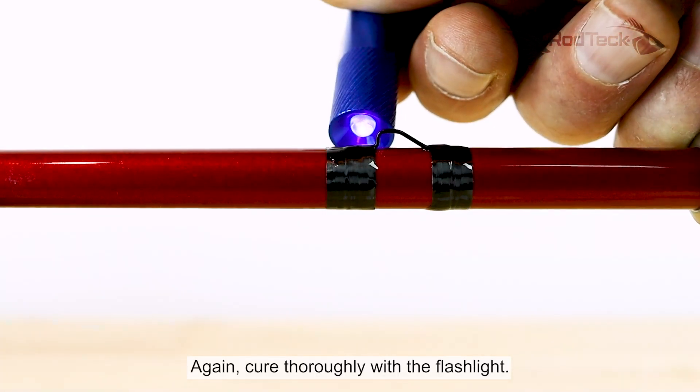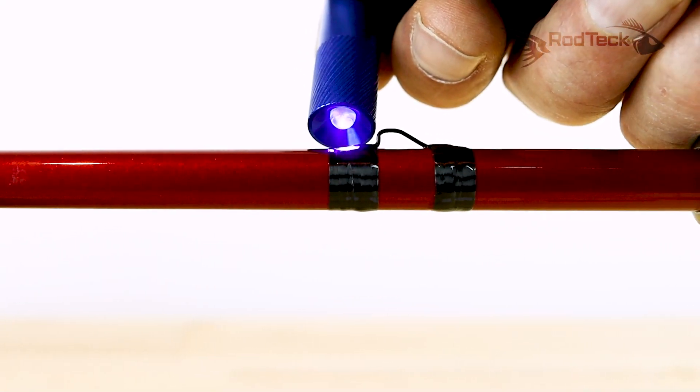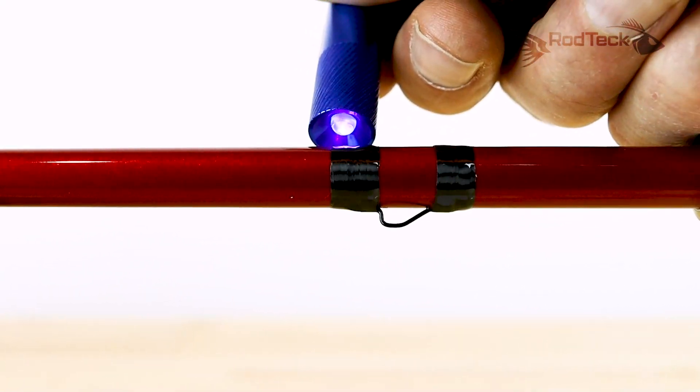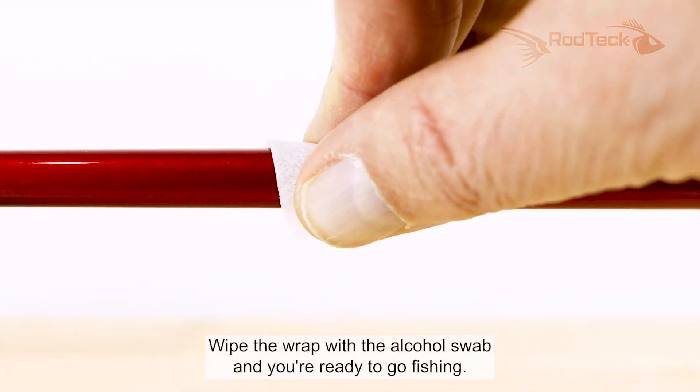Again, cure thoroughly with the flashlight. Wipe the wrap with the alcohol swab and you're ready to go fishing.